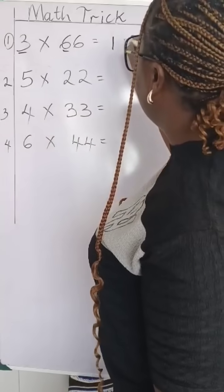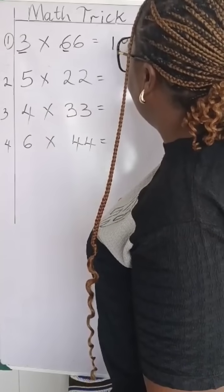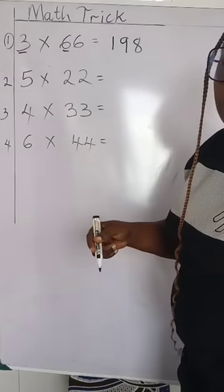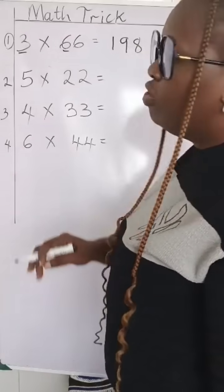Then you add 1 plus 8 is 9. So that means 3 multiplied by 66 will give us 198.